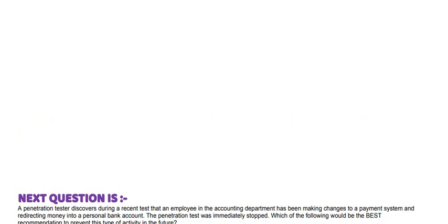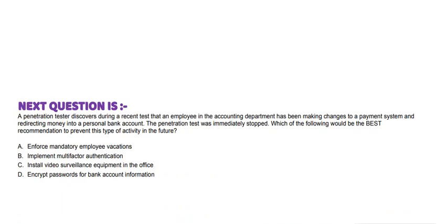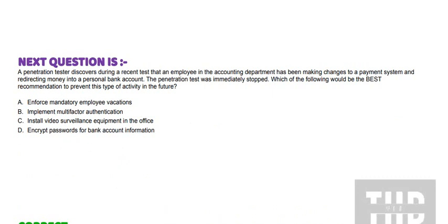Next question is: A penetration tester discovers during a recent test that an employee in the accounting department has been making changes to a payment system and redirecting money into a personal bank account. The penetration test was immediately stopped. Which of the following would be the best recommendation to prevent this type of activity in the future? Option A: Enforce mandatory employee vacations. Option B: Implement multi-factor authentication. Option C: Install video surveillance equipment in the office. Option D: Encrypt passwords for bank account information.